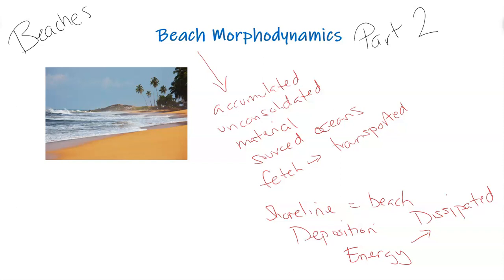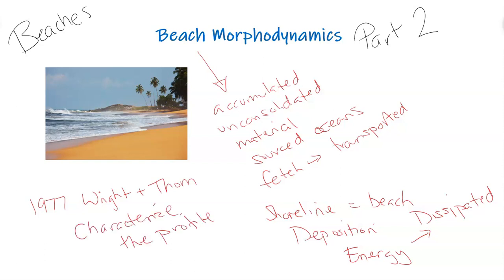The beach is highly dynamic and ever-changing. The study of the beach profile, beach shape, and different types of beaches really came around in 1977 with two gentlemen called Wright and Thon. They looked at the profiles and started to characterize the morphology of each beach, which turned into morphodynamics, because they realized these profiles were not static — they were always dynamic and changing with the ever-changing swell, conditions, and energy being dissipated onto the beach.